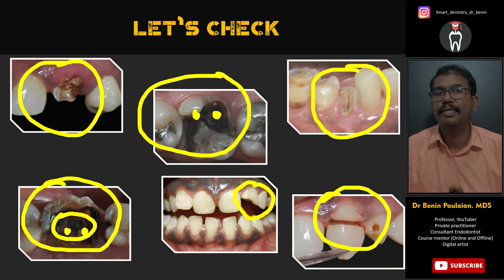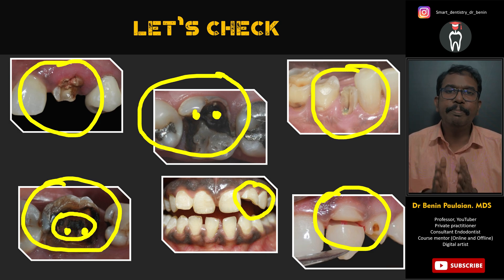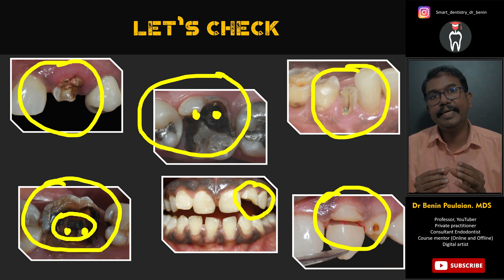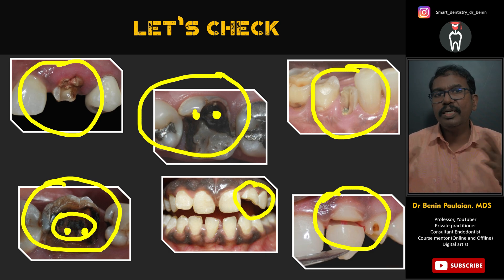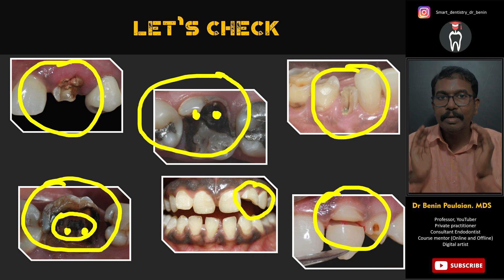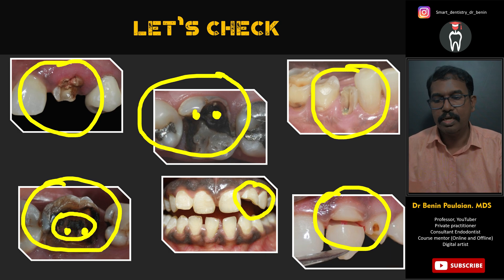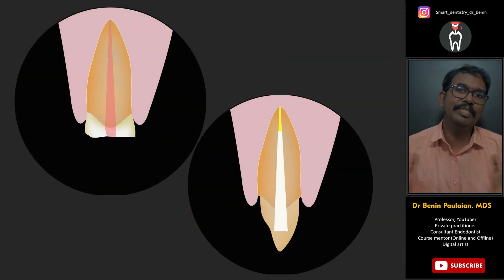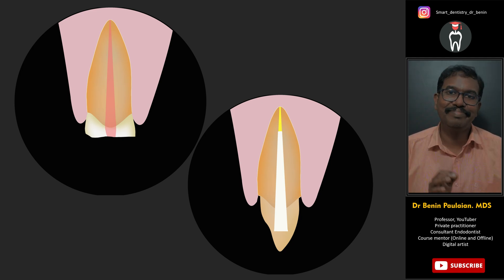I hope you have a clear idea about the selection criteria for post and core restorations. Choose the post and core material depending upon the clinical situation and the specific requirement, so that it performs better. No single type of post is universal — not the fiber post, not the metal post, and not the ribbon type. Depending upon each clinical situation, choose accordingly. I hope this presentation is useful. In the next week I will come with another presentation — stay focused and have a nice day. Thank you for watching.